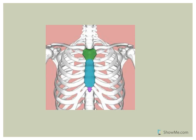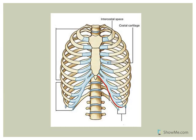The sternum has three regions. The top portion is the manubrium, which articulates with the clavicle of the appendicular skeleton and also has articulations for ribs. The middle is the body. The bottom is the xiphoid process. Here you can see the manubrium at the top, the body in green, and the xiphoid process in gold.